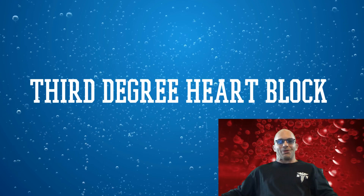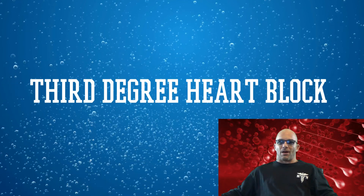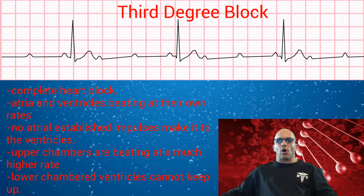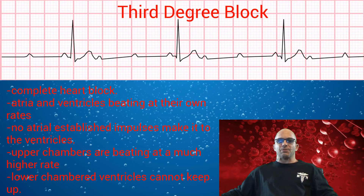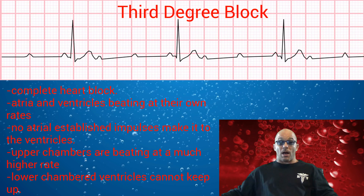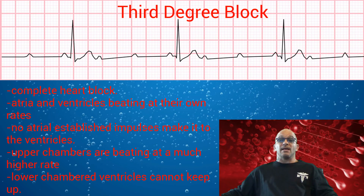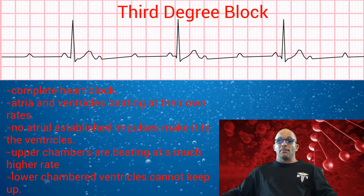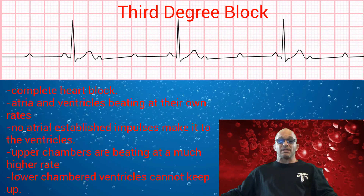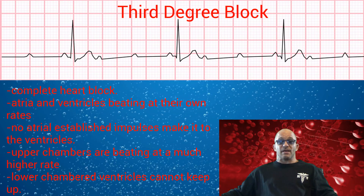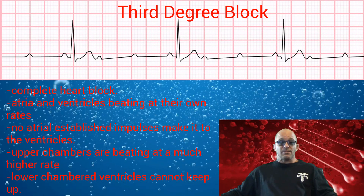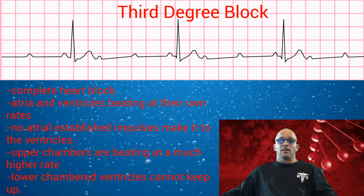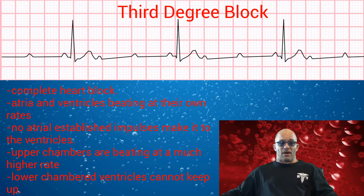We will now learn about third degree heart block. This heart block is considered to be a complete heart block. Here, the atria and ventricles begin beating at their own rates, meaning no atrial established impulses make it to the ventricles. The upper chambers are beating at a much higher rate and the lower chambered ventricles cannot keep up.